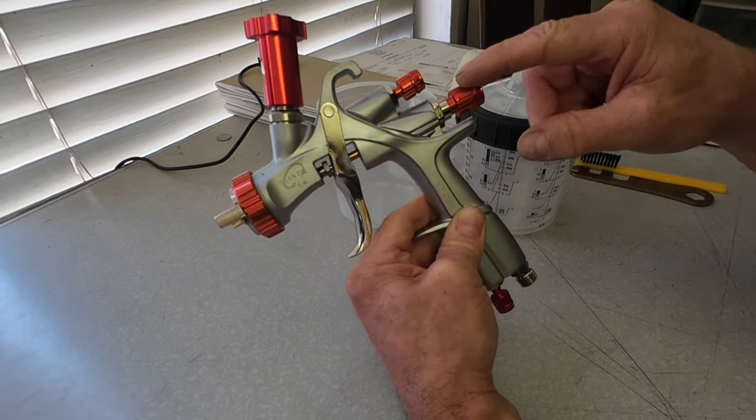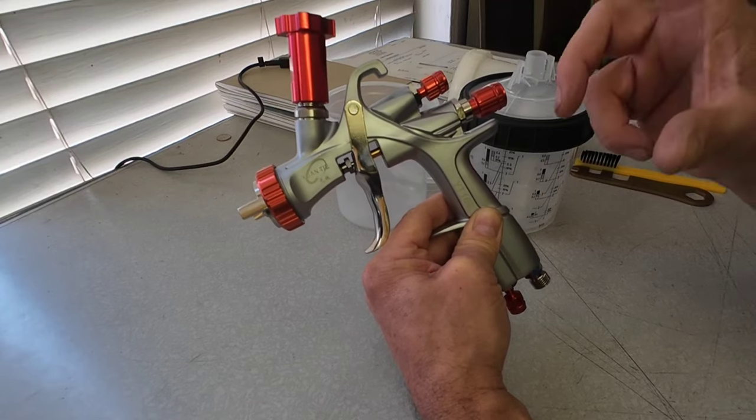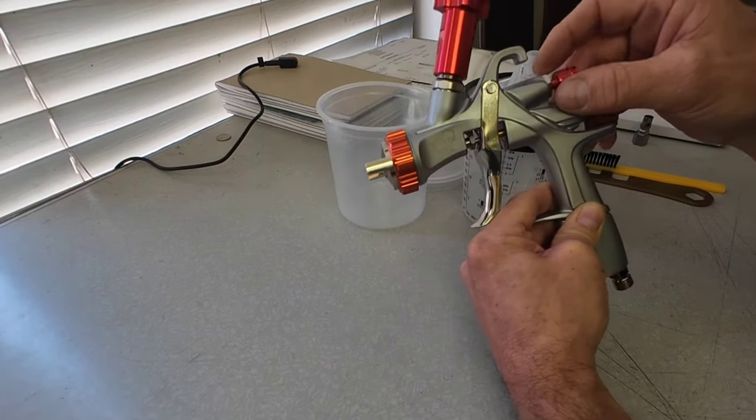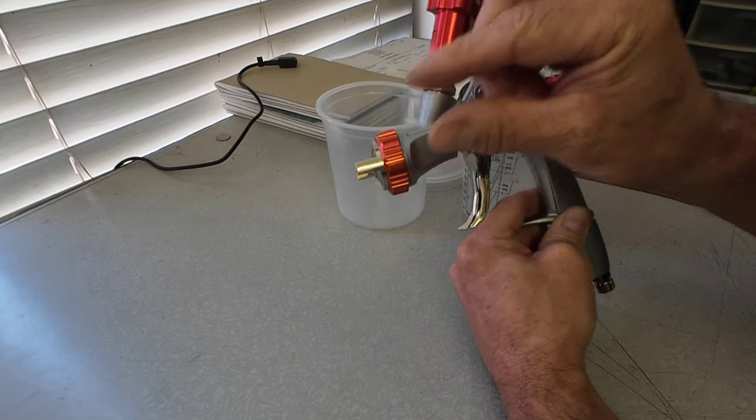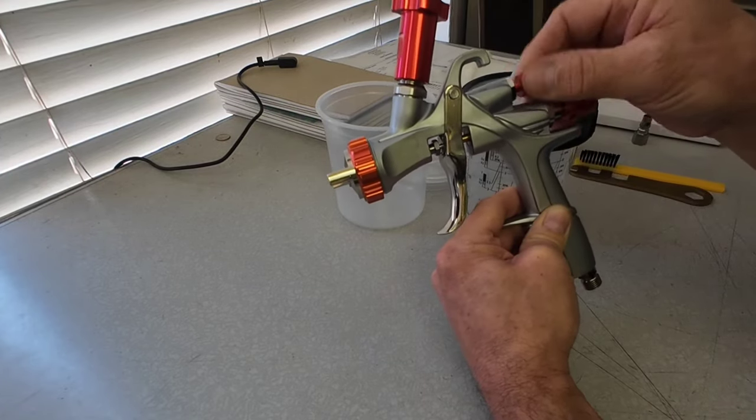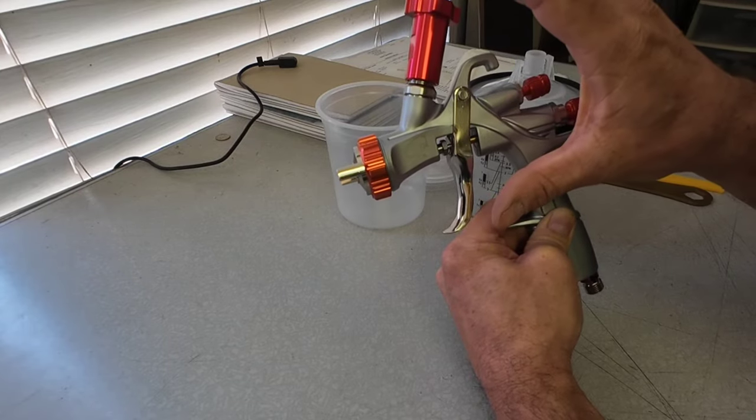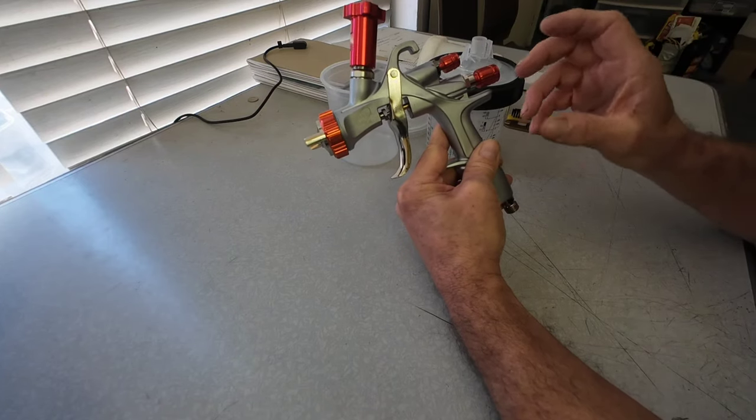Now this is the fluid volume. This controls the amount of fluid and paint that comes out of the gun. This is your fan pattern. So if you dial this all the way in, you're going to have a narrow fan pattern. When you open it all the way up, that's going to give you a wider fan pattern. And this fan pattern is 10 inches wide, which is pretty typical.